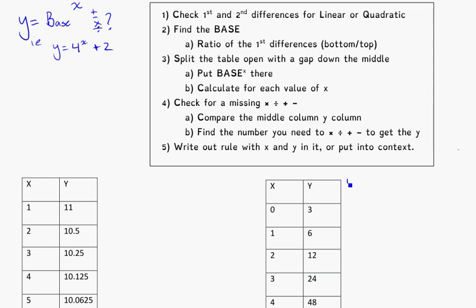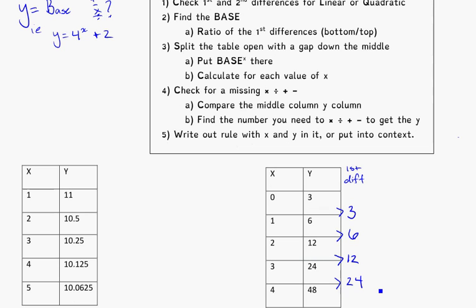If I check my first difference here between 3 and 6, I have a difference of 3. 6 and 12 is a difference of 6. 12 and 24 is a difference of 12. 24 and 48, a difference of 24. So my first difference is not constant.